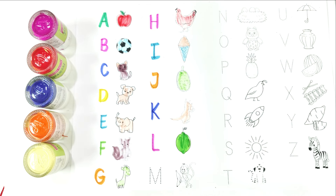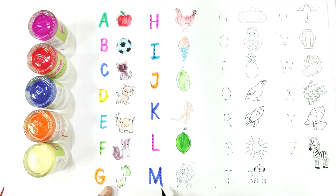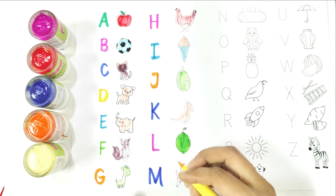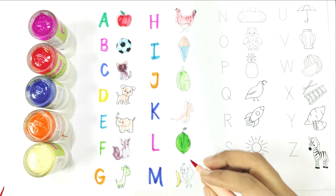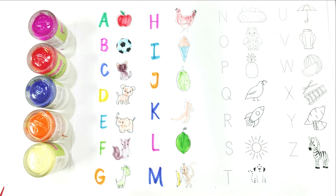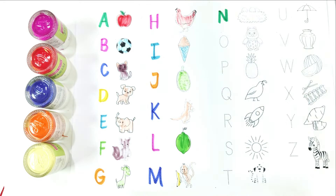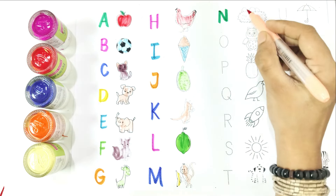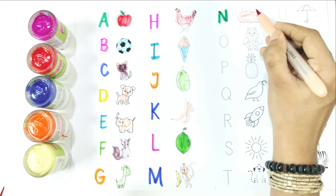Write with me. M — M is for monkey. Again, say with me: M is for monkey. Write with me. N — N is for nest. Again, say with me: N is for nest.